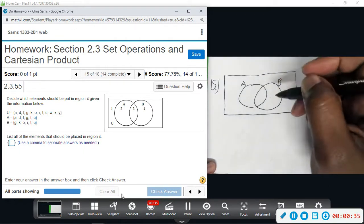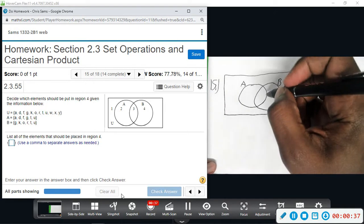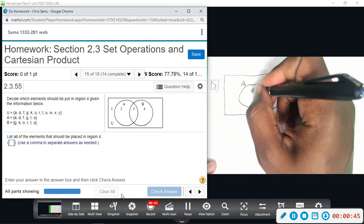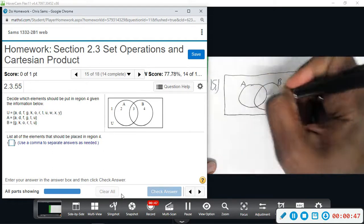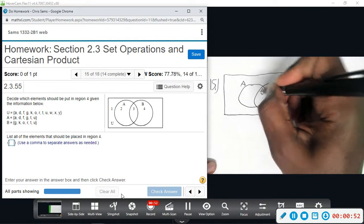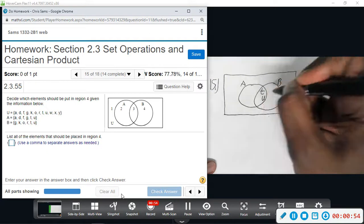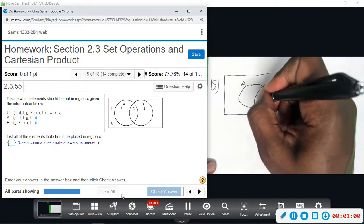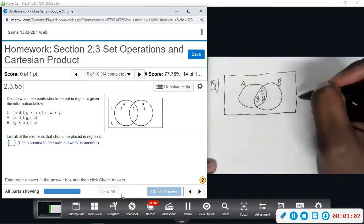And so I'm going to look at B, and B has GKORTU. And I'm going to put the elements that are in A and B in the middle. So I'm looking at the very back, and I can see they both have a T and a U. B has a G, and A also has a G. So I'm going to put the G here in the middle as well.